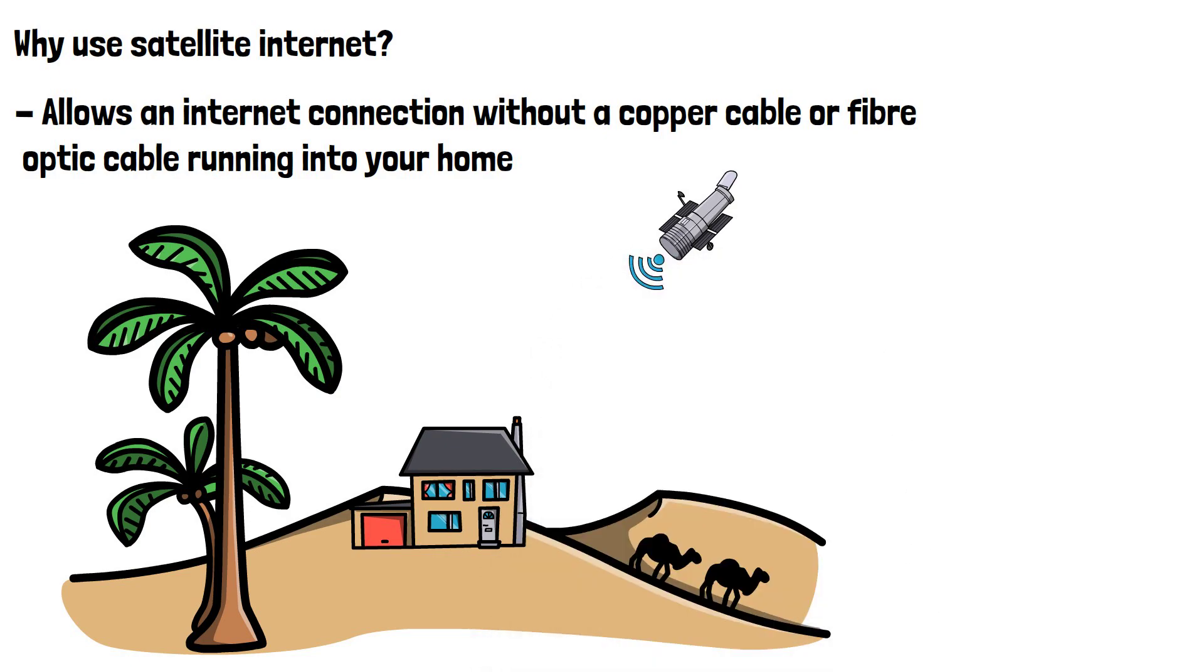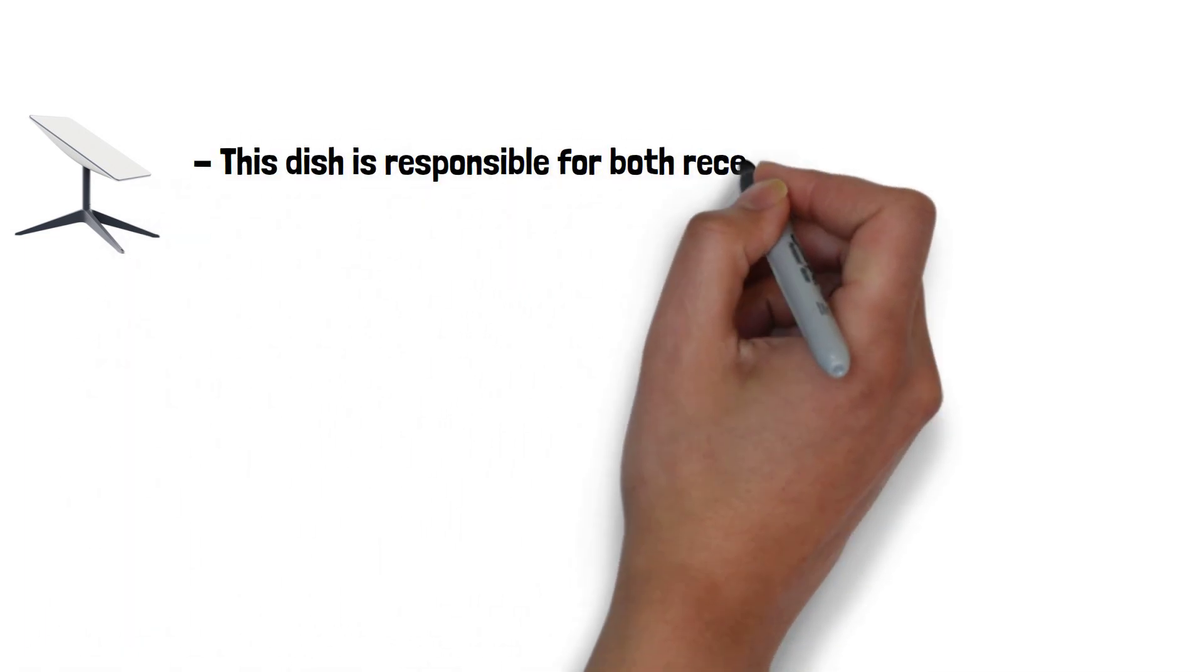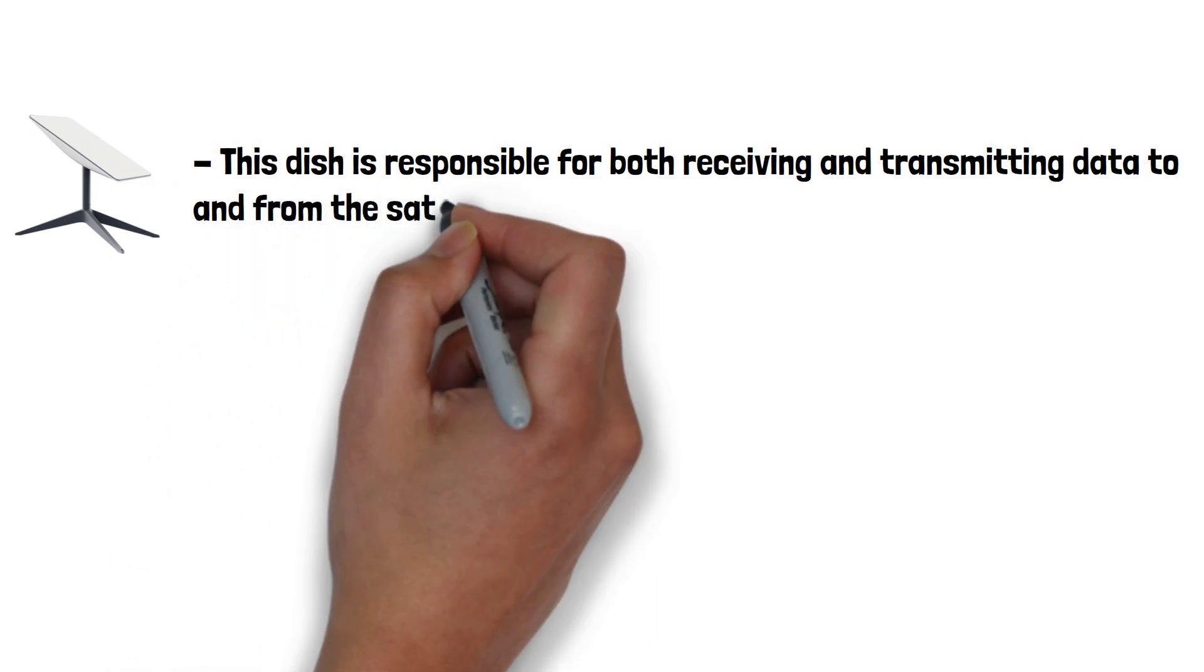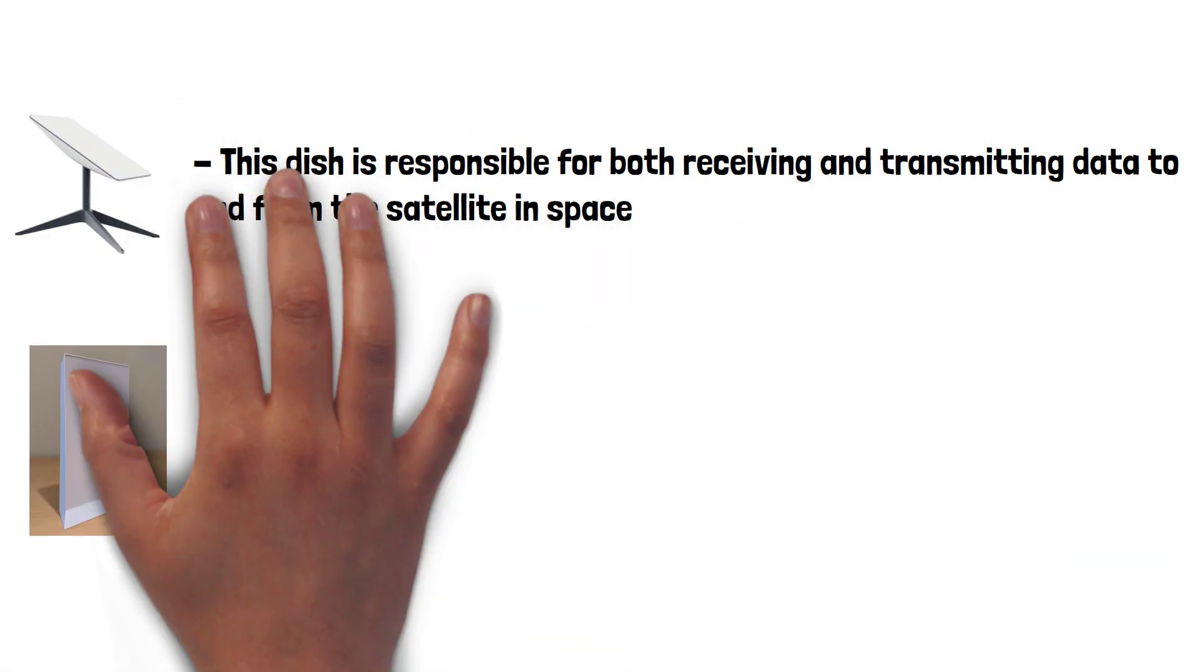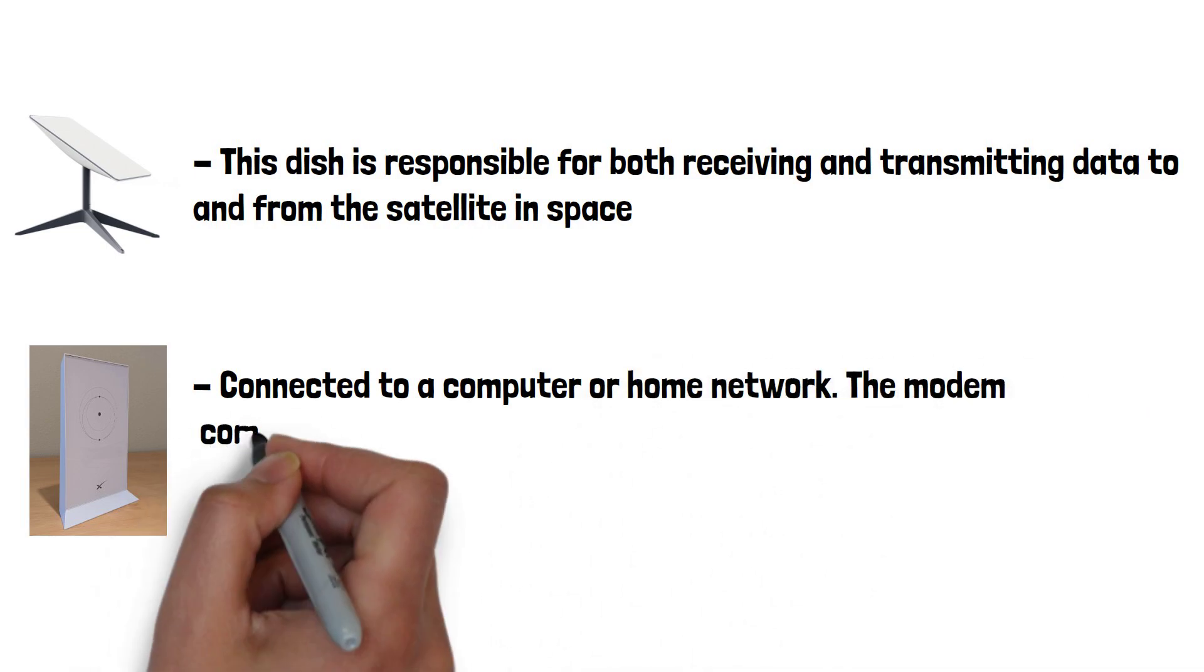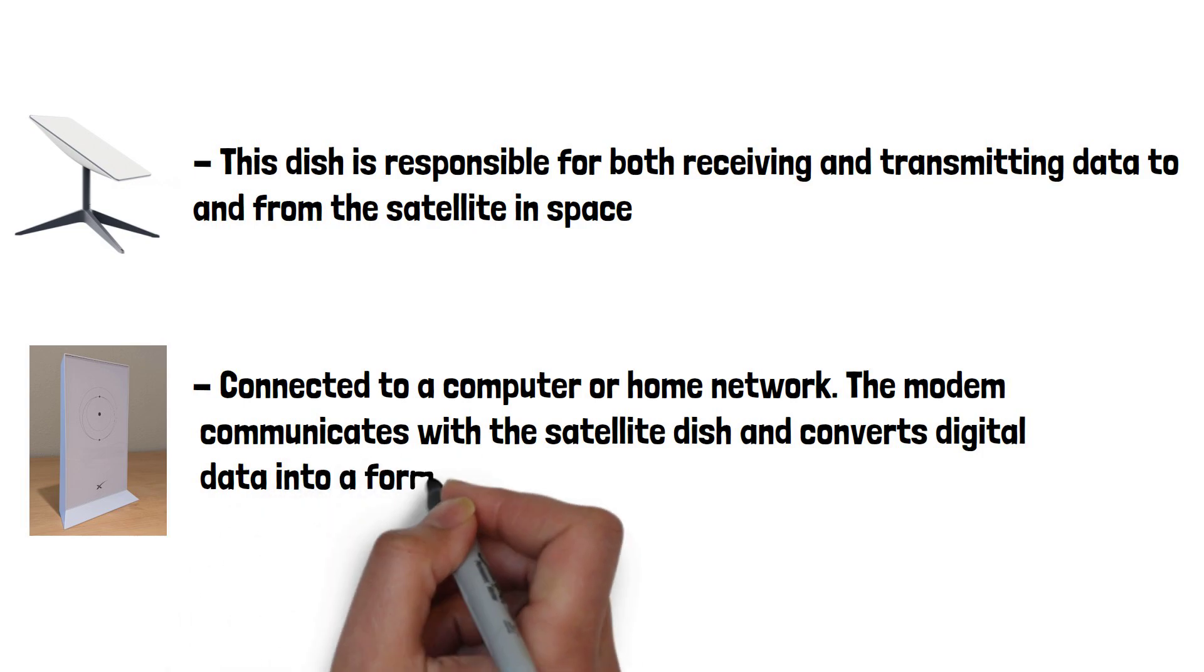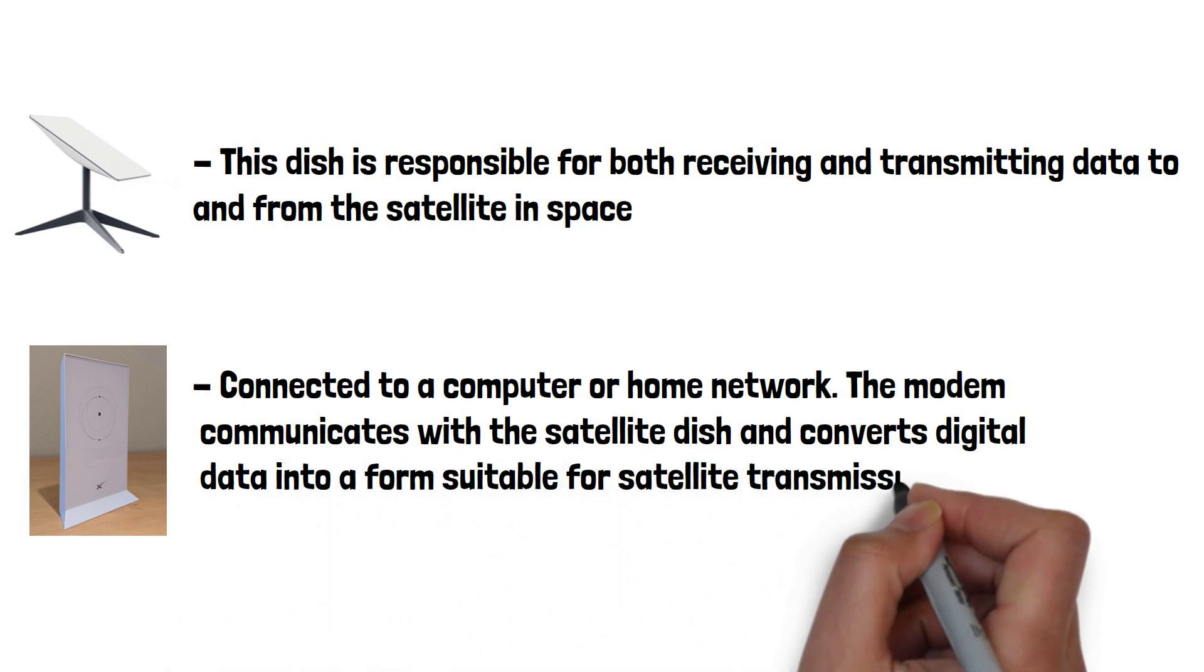Let's look at how it works. A user will need a satellite dish and a modem. The satellite dish is installed at the subscriber's location, typically on the roof or in a clear, unobstructed area. The dish is responsible for both receiving and transmitting data to and from the satellite in space. The satellite modem is connected to their computer or home network. The modem communicates with the satellite dish and converts digital data into a form suitable for satellite transmission and vice versa.